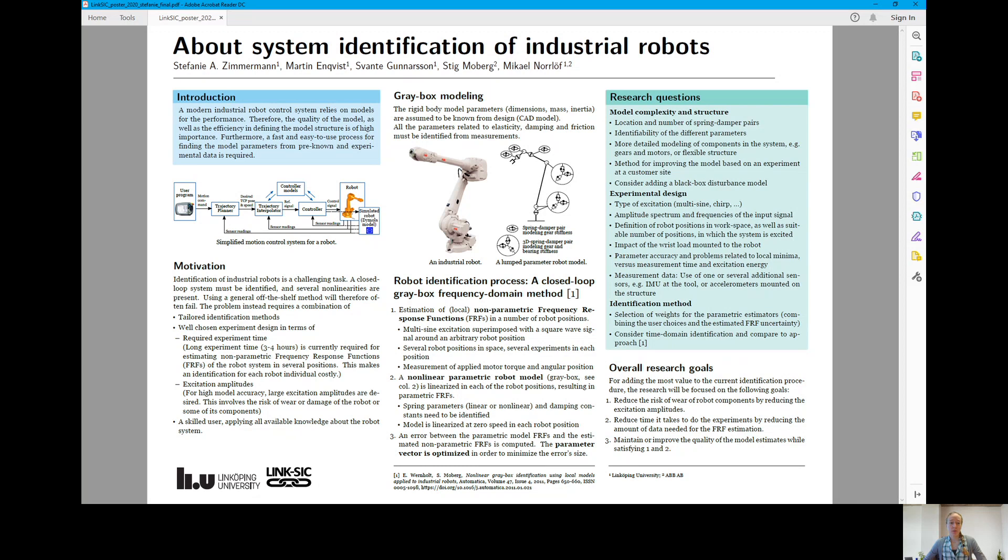Another main issue in the experiment design is the choice of the excitation amplitudes. For a high model accuracy, large excitation amplitudes are desired, but this involves the risk of wear or damage of the robot or some of its components during the experiments.